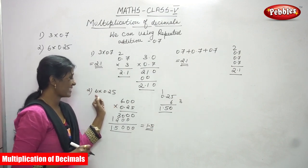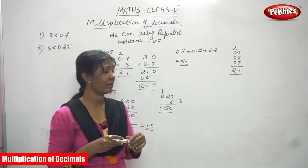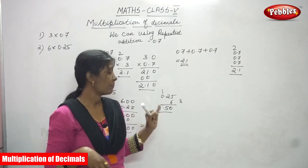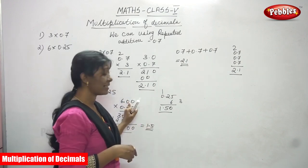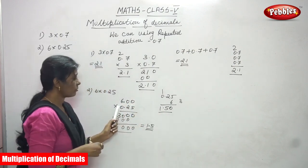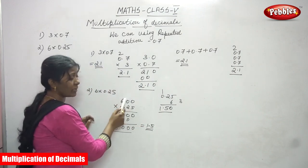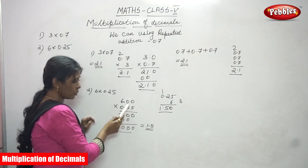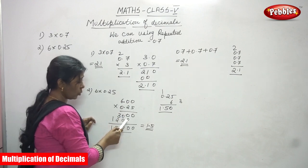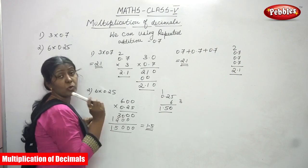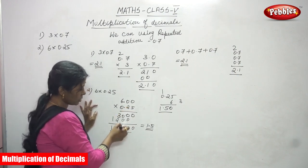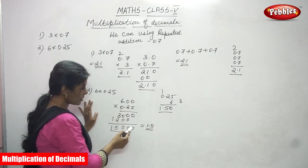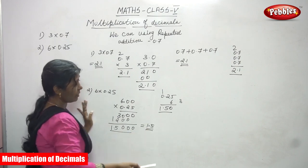Let me repeat once again: 6 into 0.25. We write 6.00 — double zero because after the point in 0.25 there are two digits, and since 6 is a whole number we convert it by adding zeros in the tenth and hundredth places. Then multiply by 5 and then by 2: 5 into 0 is 0, 5 into 0 is 0, 6 fives are 30. Then 2 into 0 is 0, 2 into 0 is 0, 6 twos are 12. Add both partial products: we get four digits, so we remove four digits from the right side. The answer is 1.5.